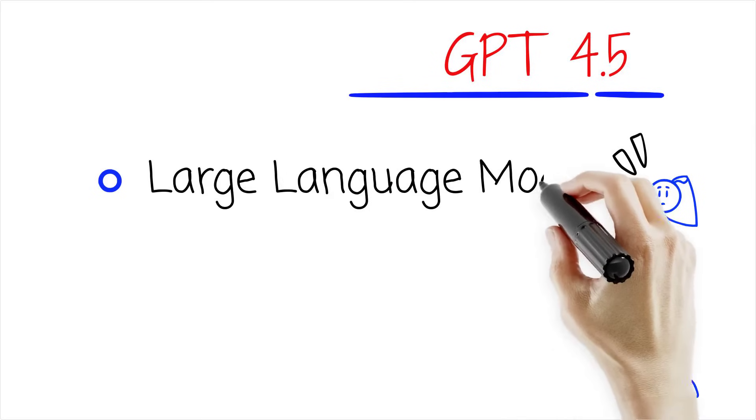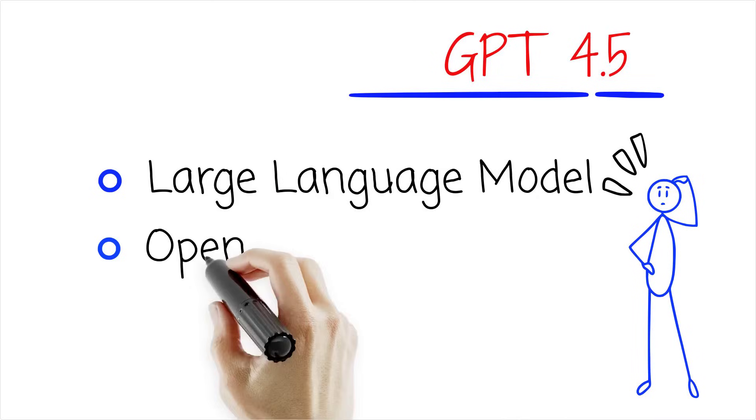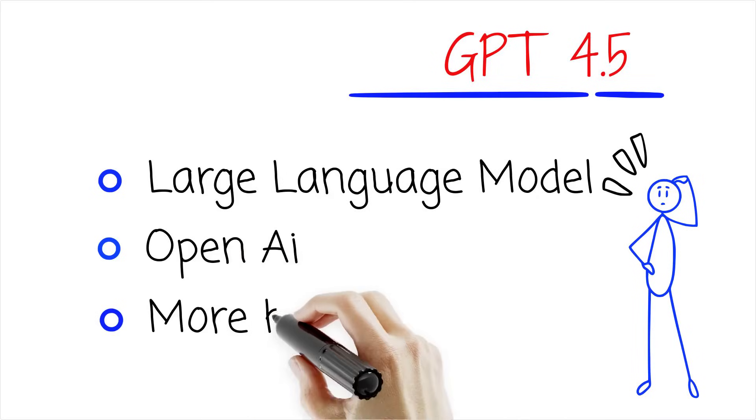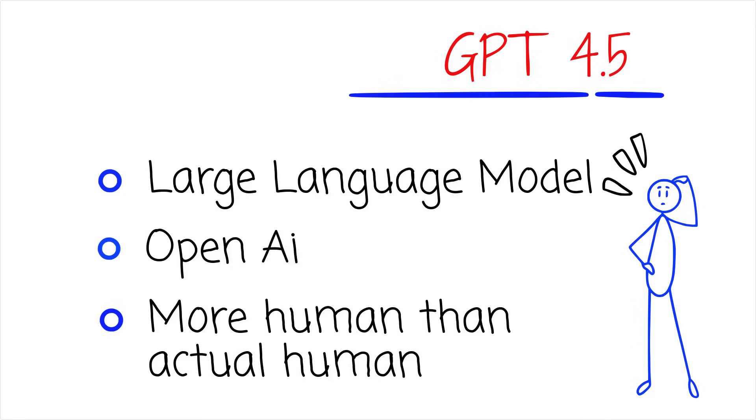Meet GPT 4.5, an experimental large language model from OpenAI that basically took the Turing test, shook its hand, and walked away with the trophy. In short, it convinced human judges it was the real human in a conversation more often than, brace yourself, the actual human.